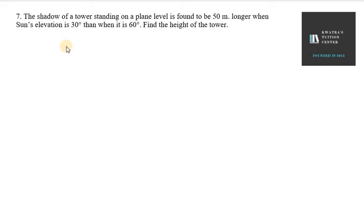Question number 7 says, the shadow of a tower standing on a plane level is found to be 50 meter longer when sun's elevation is 30 degree than when it is 60 degree. Find the height of the tower.